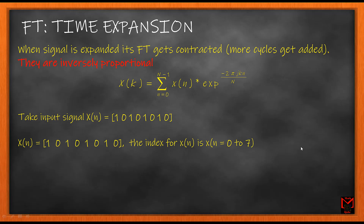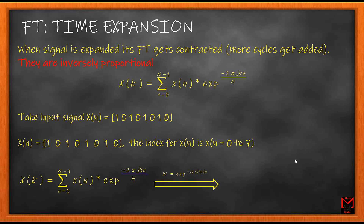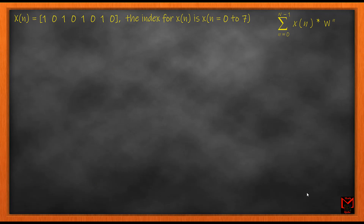The index runs from 0 to 7. For the sake of explanation I'm going to substitute W = exp(−j2πk/N), and take away the constants since I don't need them to explain time expansion. What I'm left with is the sum from n=0 to N−1 of x(n) multiplied by W to the power n. I'm going to use only this right-hand side for further explanation of the time expansion property.